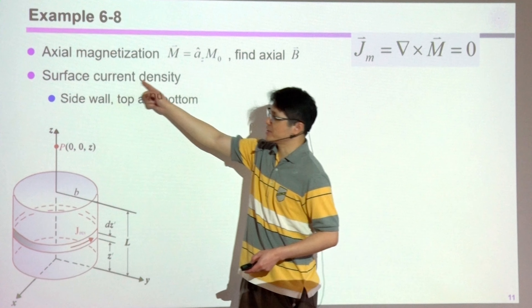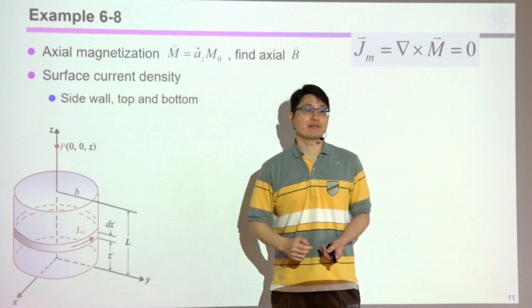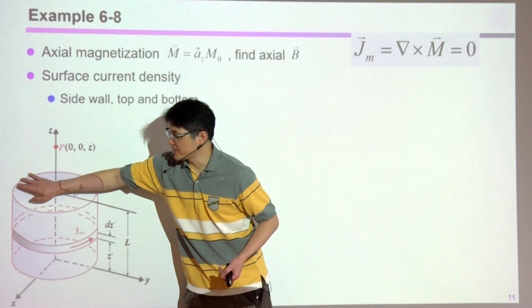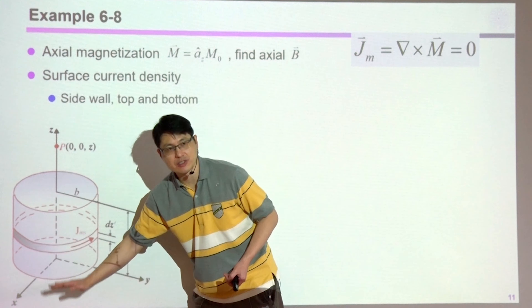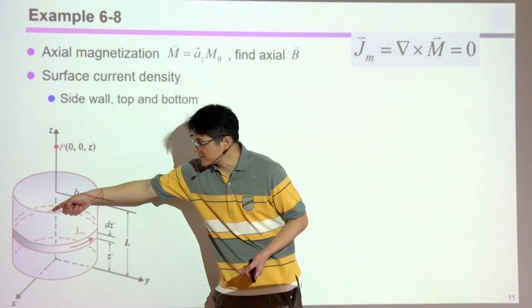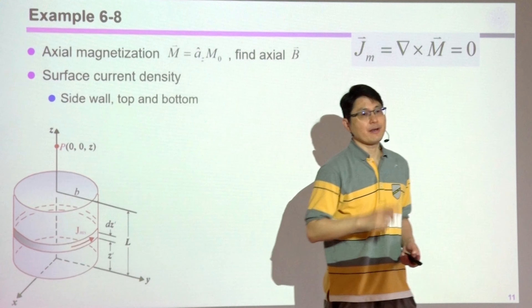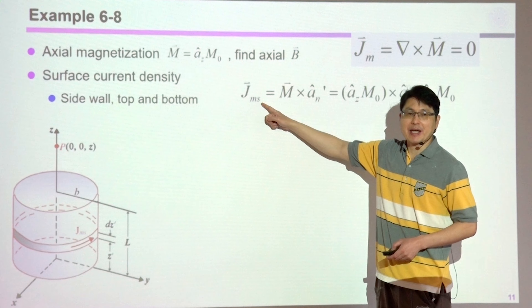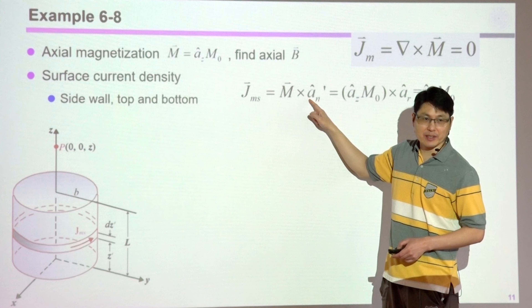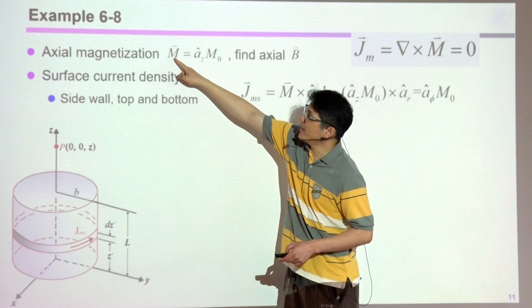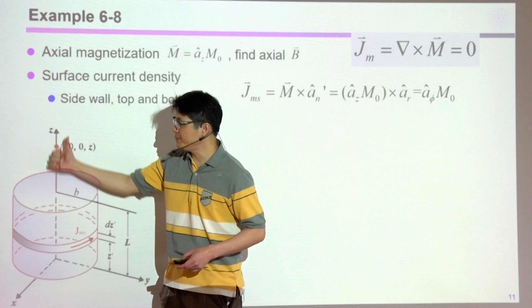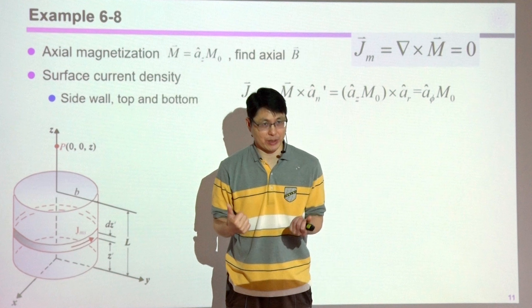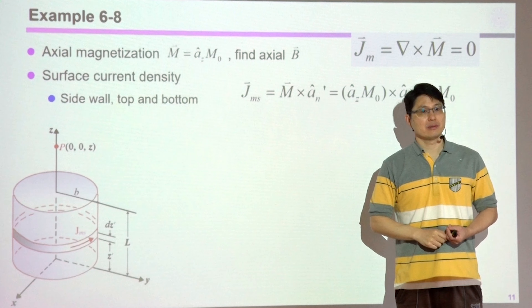You don't have the volume current density, so you only have to care about the surface current density. The question is: how many surfaces do you have? For the cylinder, you have the top lid (surface number one), the bottom lid, and the third surface — the circumference. The surface magnetization current density is the cross product of n̂ with M. M is aligned in the z direction, but your top and bottom surface normals are also in the z direction. Z cross z equals zero, which means the top and bottom do not contribute to the surface current density.